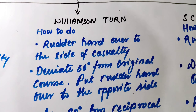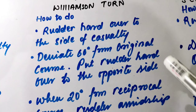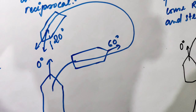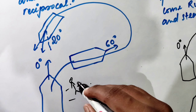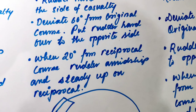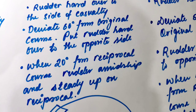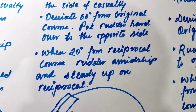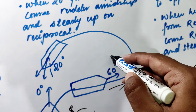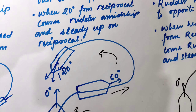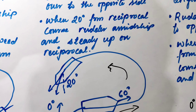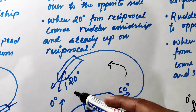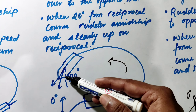To perform the Williamson turn: rudder hard over to the side of the casualty. Then deviate 60 degrees from the original course. After that, put the rudder hard over to the opposite side. When the heading is 20 degrees from the reciprocal course, put the rudder amidship and steady up on the reciprocal course.